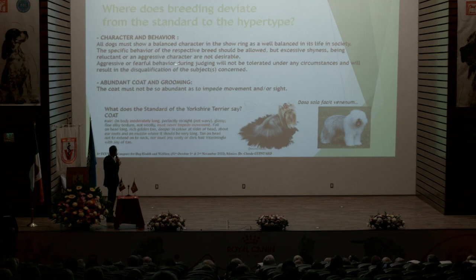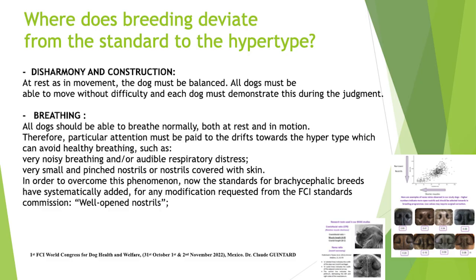You can see here some animals with overdeveloped characteristics. Hypertypes can touch character and behavior. All dogs must show a balanced character in the show ring as well as balance in life in society. The specific behavior of the respective breeds should be allowed, but excessive shyness or an aggressive character are not desirable.